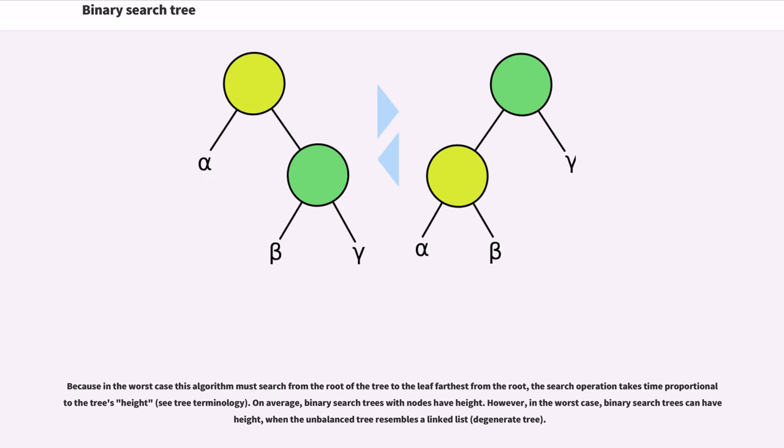Because in the worst case this algorithm must search from the root of the tree to the leaf farthest from the root, the search operation takes time proportional to the tree's height. On average, binary search trees with n nodes have height. However, in the worst case, binary search trees can have height n when the unbalanced tree resembles a linked list degenerate tree.